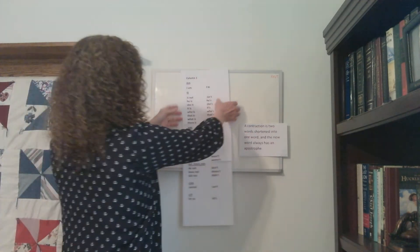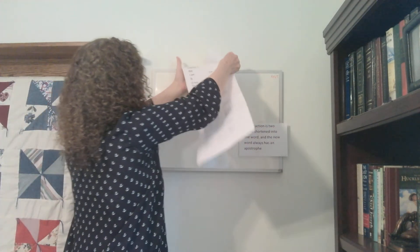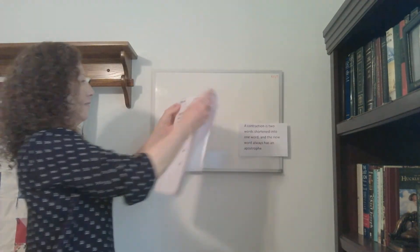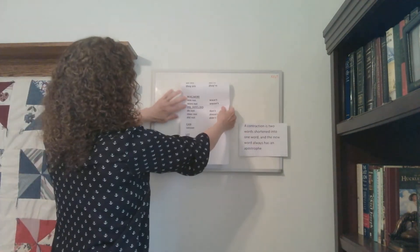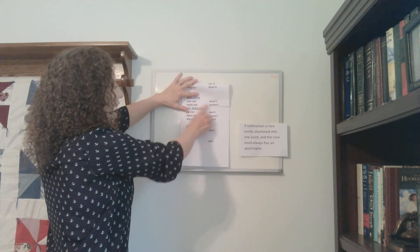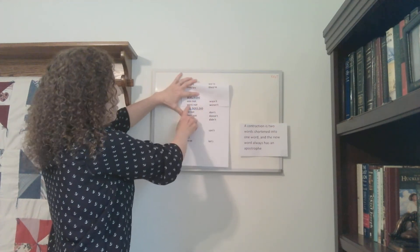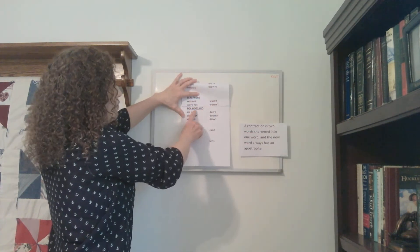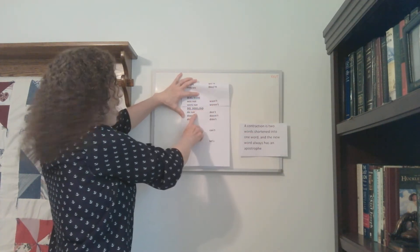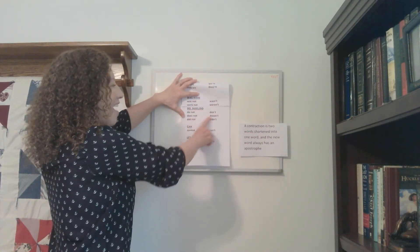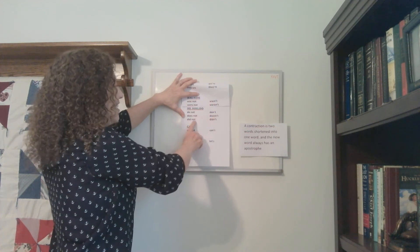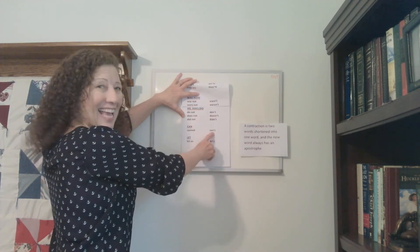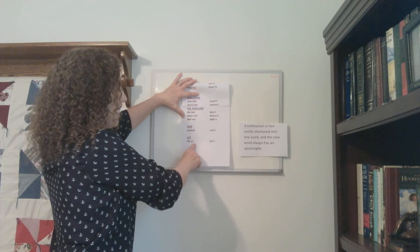Alright, let's look at was and were. Was not — wasn't. Were not — weren't. And then for do, does, and did: do not — don't. Does not — doesn't. Did not — didn't. Cannot — can't. And let us — let's.